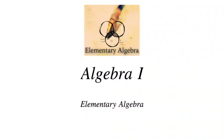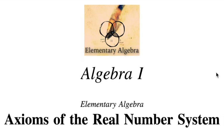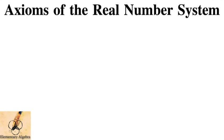Hi there. In this video, we're going to learn about the axioms of the real number system, also known as the properties of the real number system. In mathematics, the word axiom means statements that are simply obvious — they are established, accepted, and usually self-evident statements. We just need to explain them here so that we will have a universality or a single understanding when it comes to these properties.